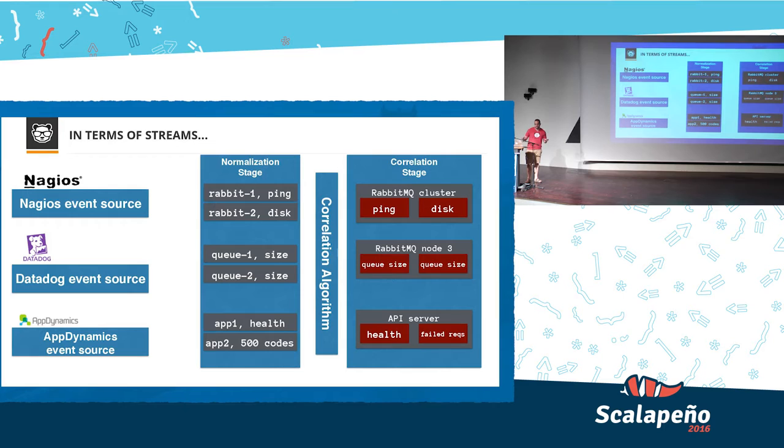I'd just like to emphasize something important that BigPanda is a real-time system. When a NOC team is looking at their BigPanda screen, they expect to be alerted immediately whenever there's an alert coming from Nagios, Datadog or AppDynamics. We can't tolerate any delays. Well, we can tolerate a delay, but not a big one. And we can't tolerate losing any data.